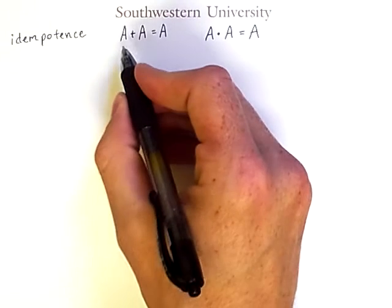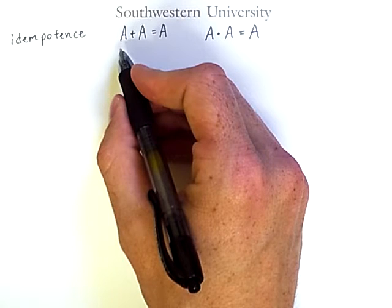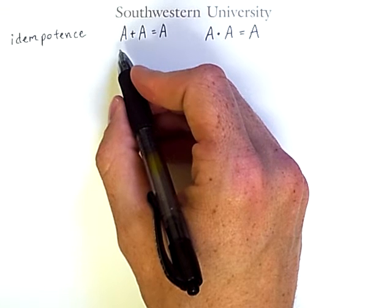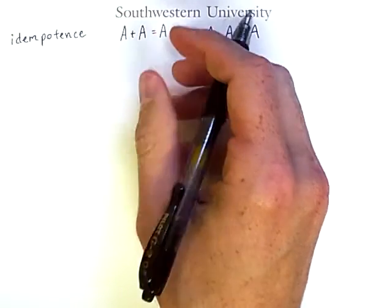So in this example, A could be a complex Boolean expression like we saw in a previous video, but if it is repeated with an or-between, then you can simplify the whole thing to just one instance of the expression.